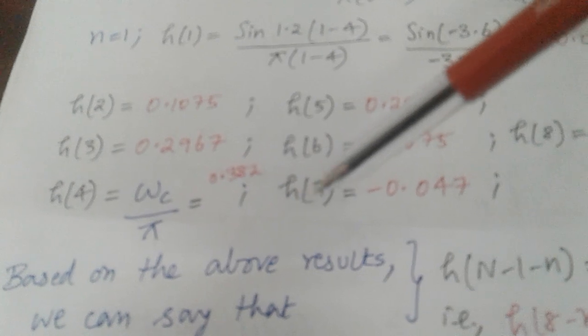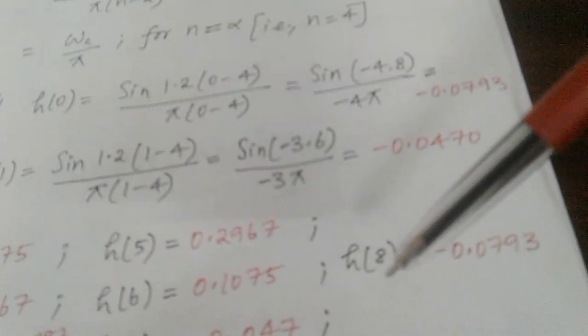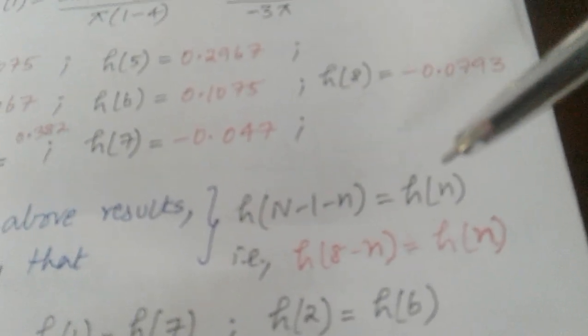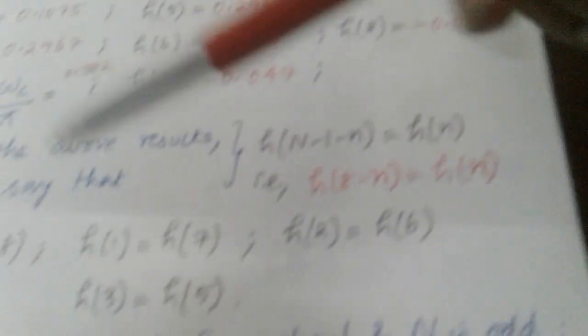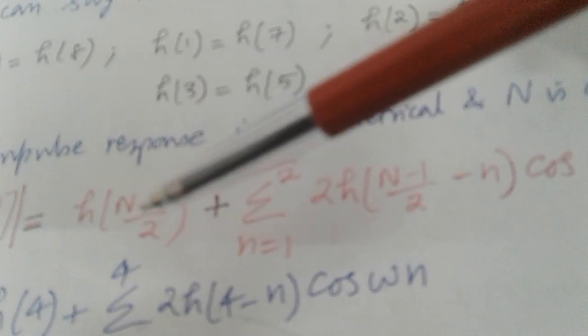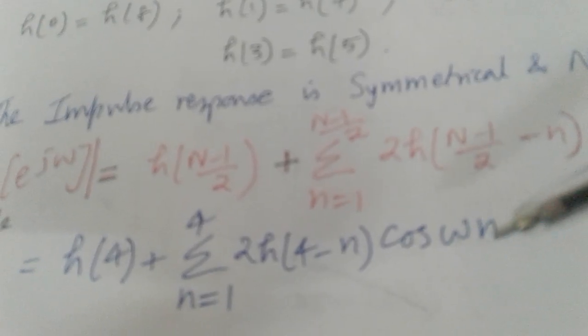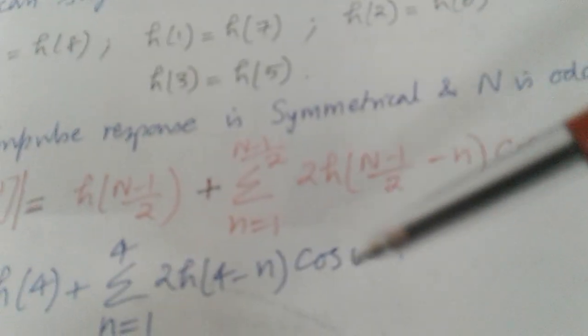Step 4: From the results, observe that H(0) = H(8), H(1) = H(7), etc., confirming the symmetry condition H(N−1−n) = H(n), i.e., H(8−n) = H(n). Since this is true, the impulse response is symmetric and N is odd (N=9), so we use the Case 1 formula: |H(ω)| = H(4) + 2·Σ[n=1 to 4] H(4−n)·cos(nω). Substitute N=9, giving (N−1)/2 = 4. Note that this ω is the frequency variable, not ωc.